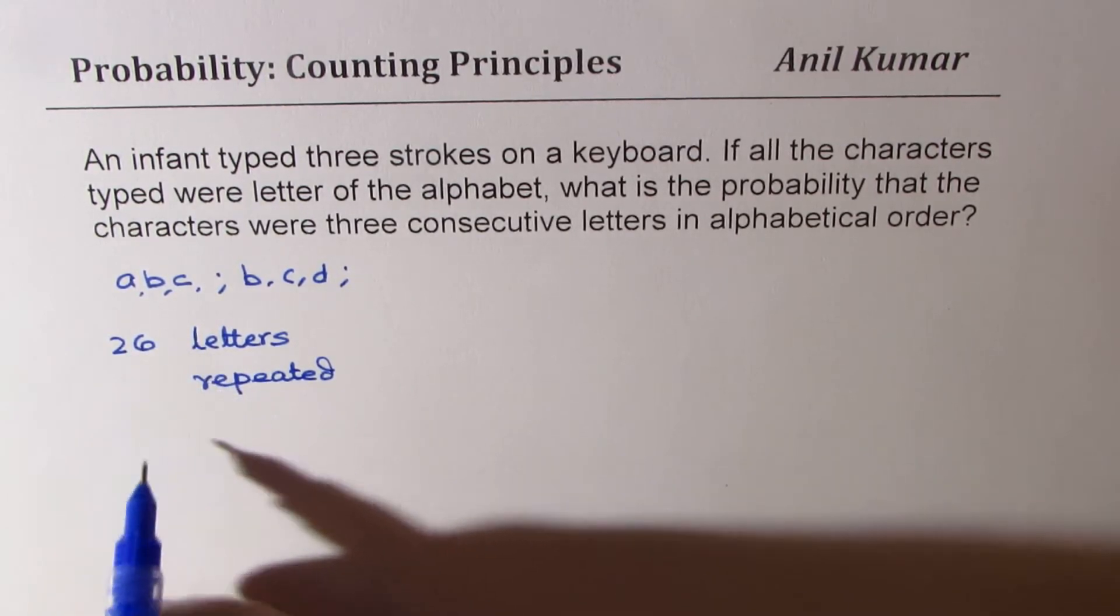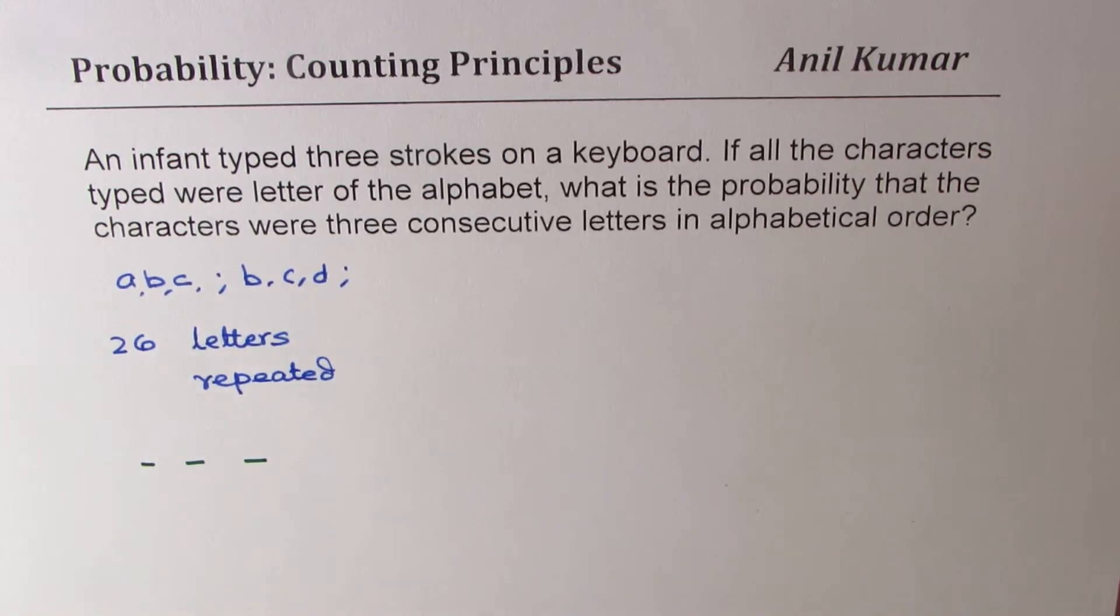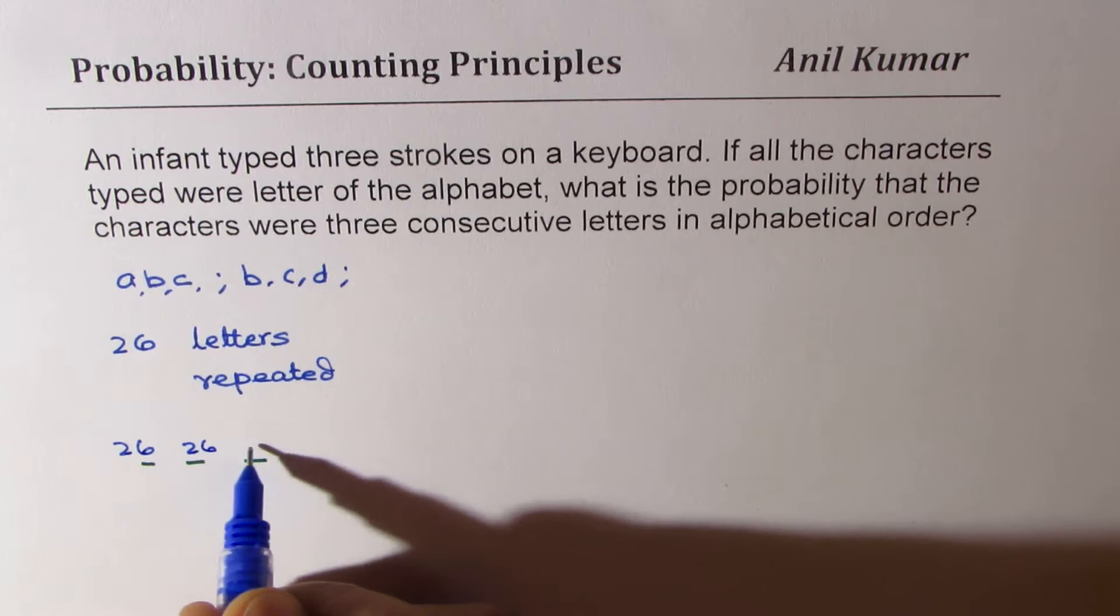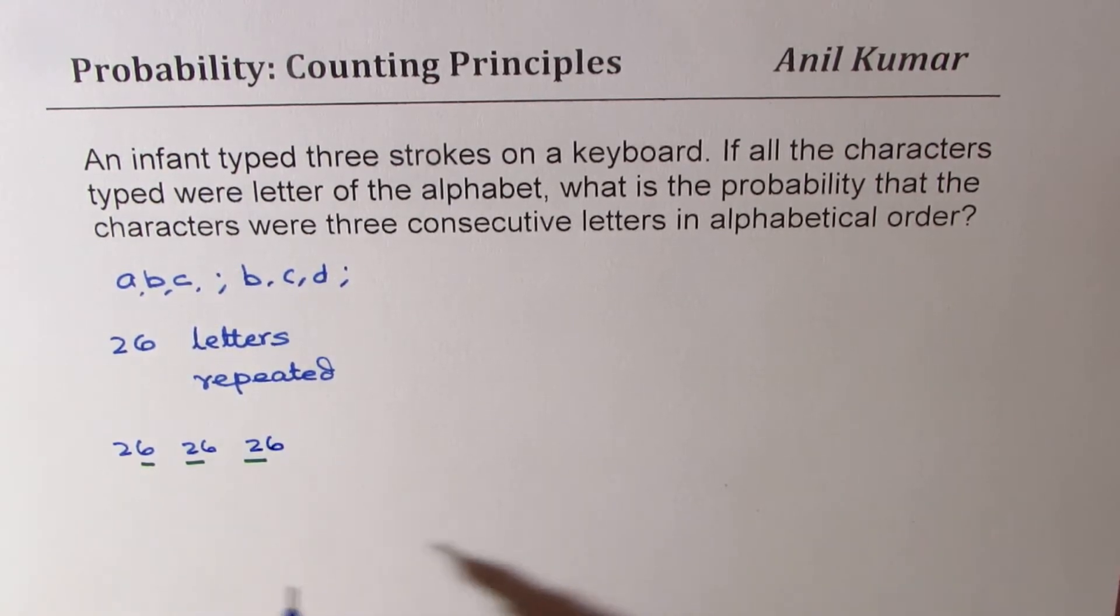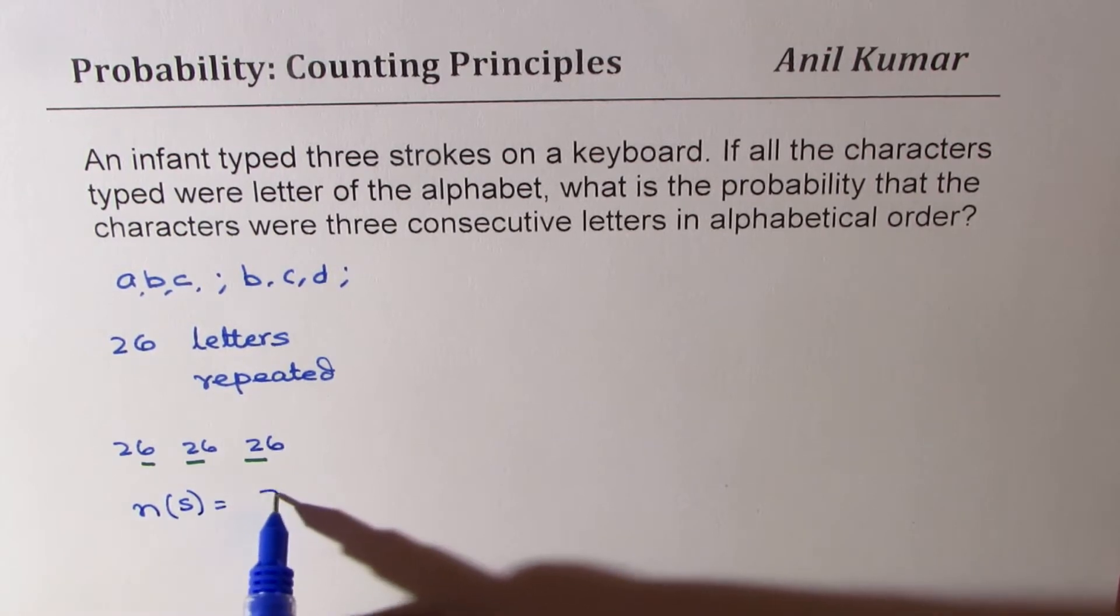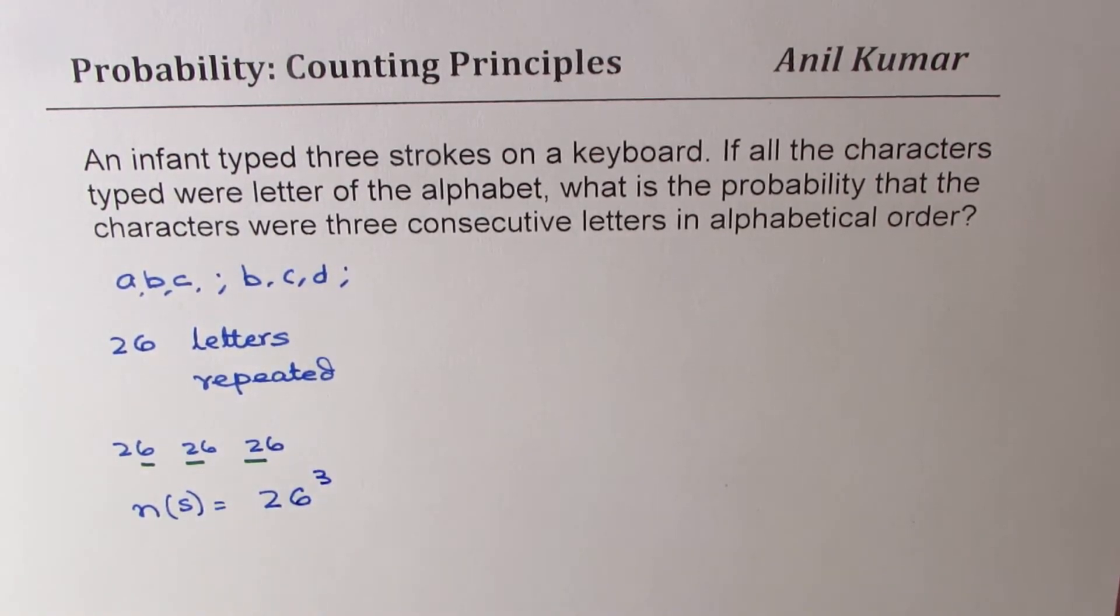So we have three positions to select. In these three positions, we could get 26 here, 26 there, and 26. So in the sample space, we have 26 cubed as all the possibilities.